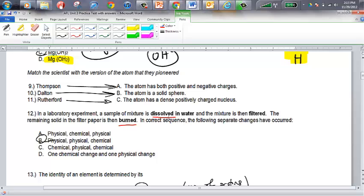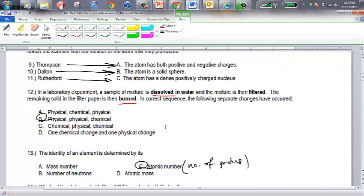Dissolving is not a chemical process. It's not a chemical change. There's no chemical reaction involved in that. We do have ion dissociation, but the materials aren't changing their identity, so it's not a chemical process. Filtering is a physical process. Burning, you've got new atom combinations as a result of burning, so that's a chemical reaction, so that's a chemical process. So that means physical, physical, chemical is your proper answer for number 12.